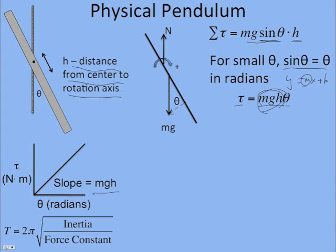If we use our generic period formula, the inertia, since it's a rotating system, would be the rotational inertia I, and the force constant would be the slope of our line, mgH. So slope is a force constant, really you should call it a torque constant.